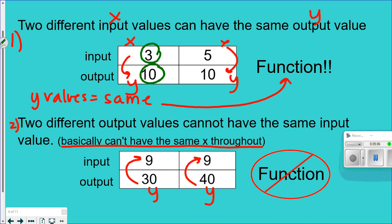Here's a story to explain rule one: you go to the store and buy three pairs of socks for ten dollars. You go back the next day and there's a sign that says buy three, get two free — so now you get five pairs of socks for ten dollars. That's still a function because the same input (ten dollars) can yield a different output.